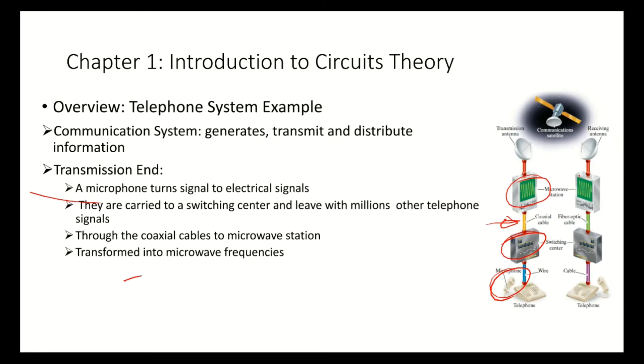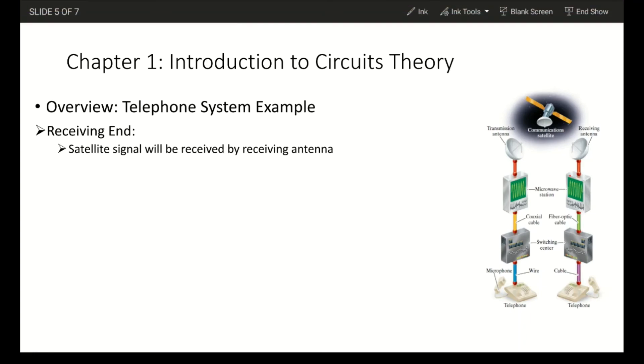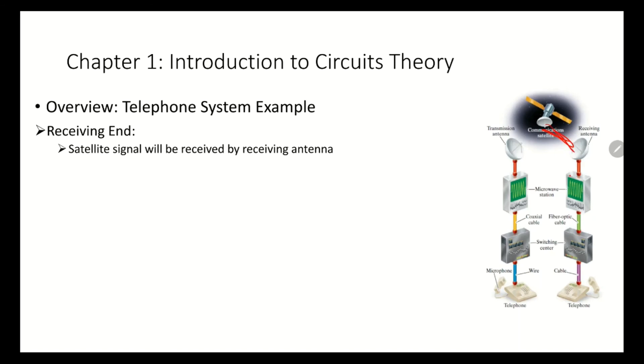The microwave station will transform the signals into microwave frequencies and broadcast them from the transmission antenna to space via the satellite. Now from the other side, the receiving antenna will capture the microwave frequencies.